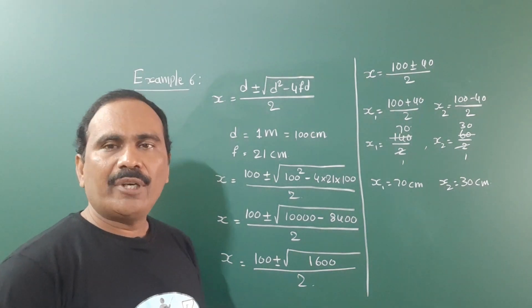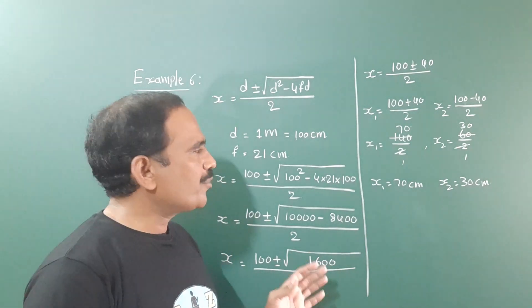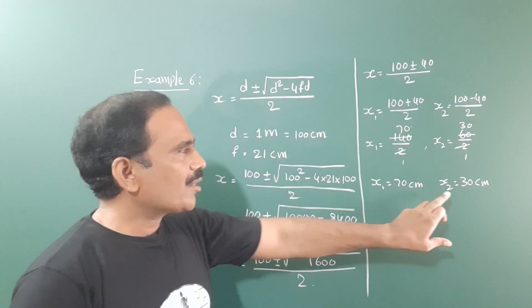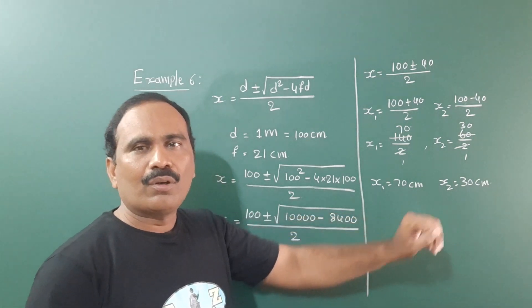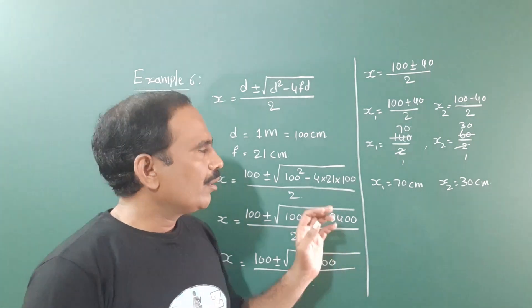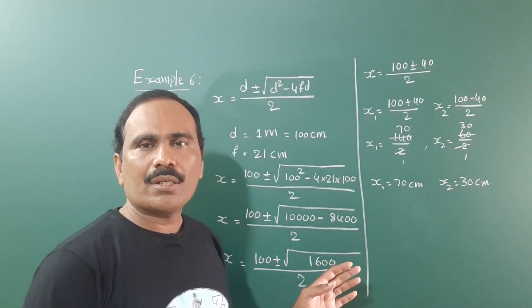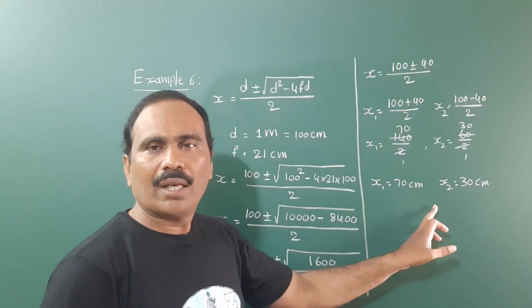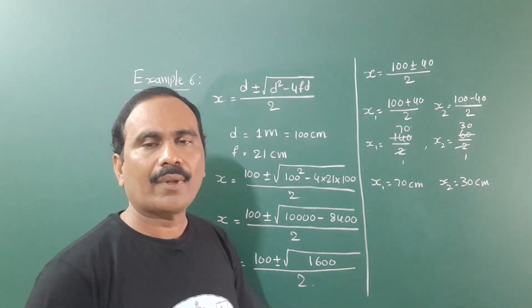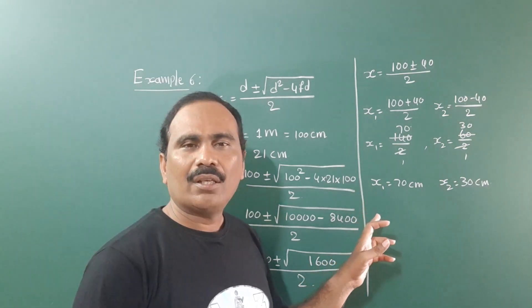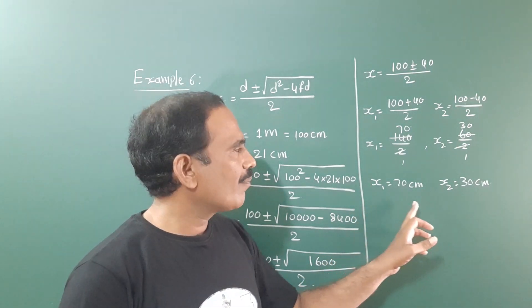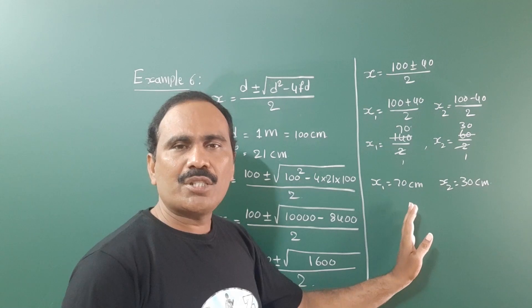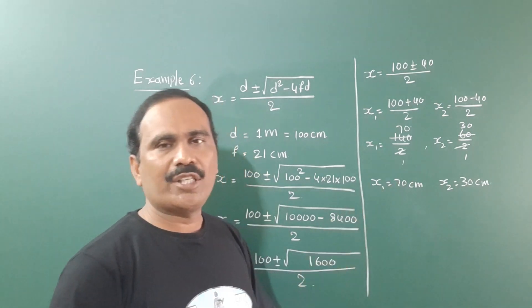So if the distance from the lamp to the lens is 70 centimeters, then the lens-to-screen distance is 30 centimeters — and we get a sharp image. Alternatively, if the lamp-to-lens distance is 30 centimeters, then the lens-to-screen distance is 70 centimeters, and we also get a sharp image.